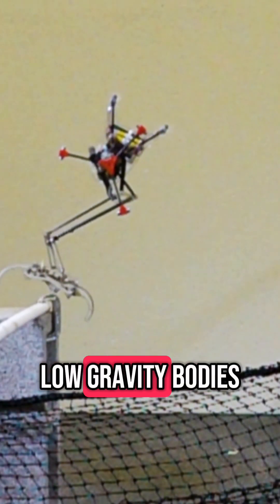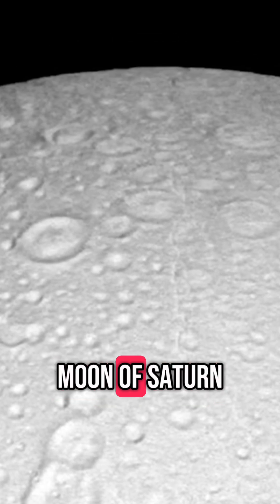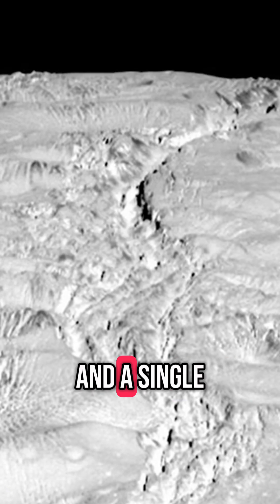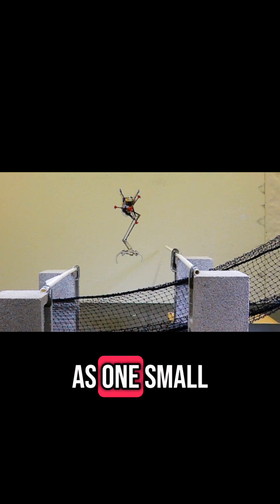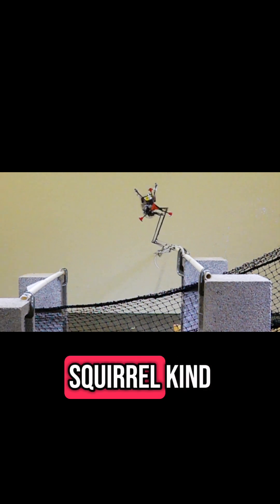Or to explore low-gravity bodies in space, like Enceladus, a moon of Saturn where gravity is only one-eightieth of Earth's, and a single jump from Salto would cover a football field. Think of it as one small step for a robot and a giant leap for squirrel-kind.